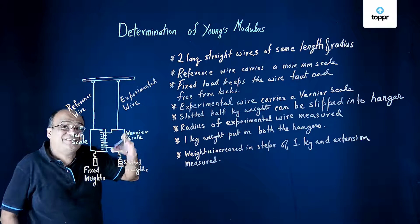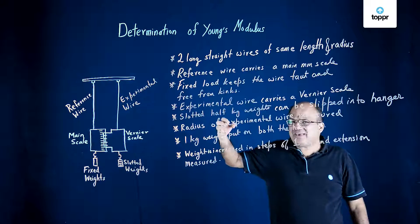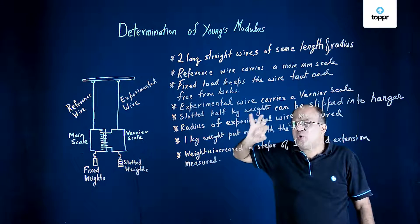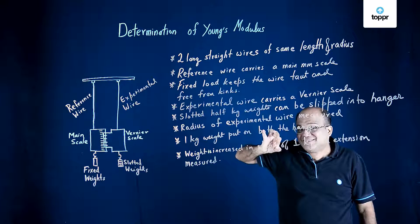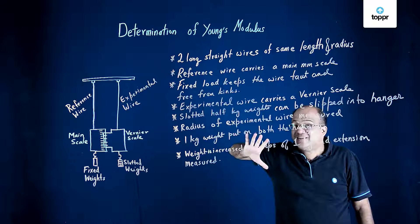Again put half kg, wait for a minute, note down the extension. So this way we get data of load versus extension and this is what is going to help us to calculate the Young's modulus.